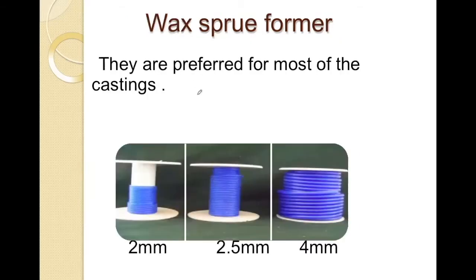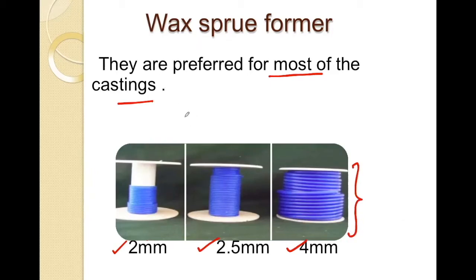Wax sprue formers are preferred for most castings. The diameters available for wax sprue formers are 2 mm, 2.5 mm, and 4 mm. The diameter of the sprue former is directly proportional to the size of the casting. The wax sprue former has low thermal conductivity, so it does not distort the wax pattern and can be easily burnt out during wax burnout — it need not be removed. However, the problem with the wax sprue former is that it lacks rigidity.